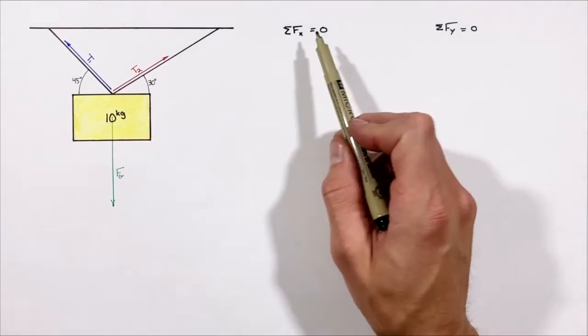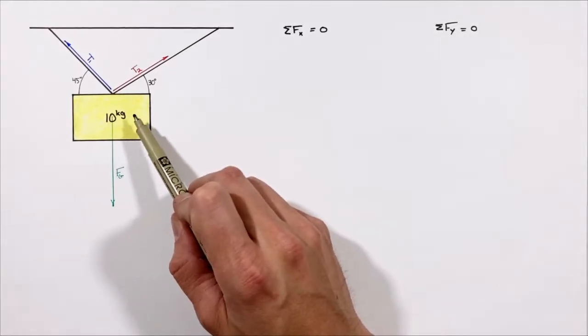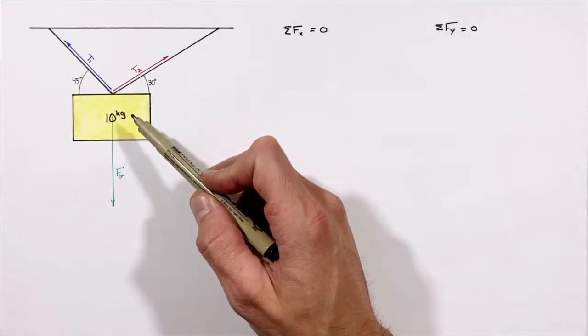Now with a complete free body diagram, we can start to apply this situation to these two conditions which must be met in order to keep the block static or hanging still.